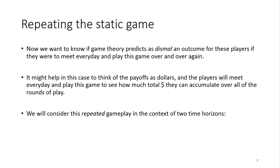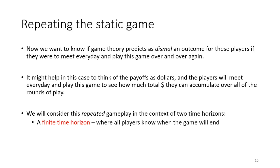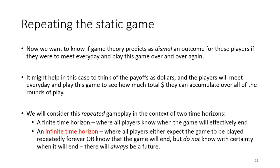We're going to consider repeated gameplay in the context of a finite time horizon, meaning all players know the game is going to end at some point and they all know exactly when. The end of the game is common knowledge to all players. This is not to be confused with the infinite horizon case we'll look at in next video segments, where players either play for an infinite number of periods, or play a finite number but nobody knows exactly when the game will end — inducing behavior as if they're playing an infinite horizon game.